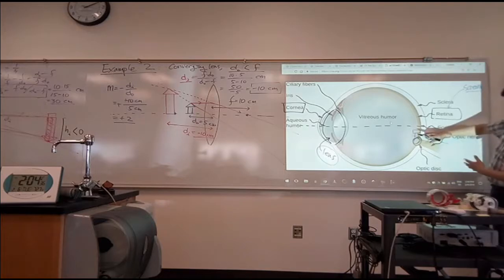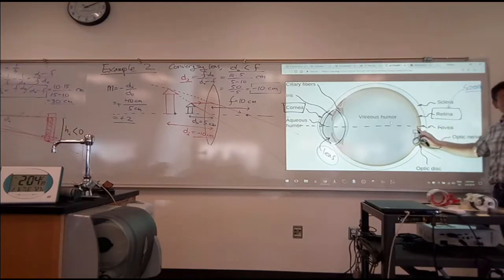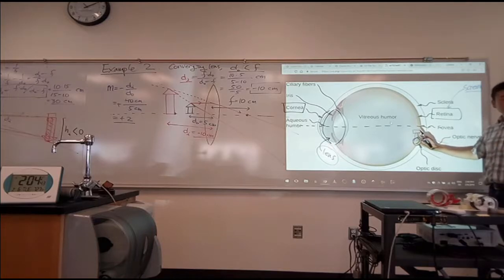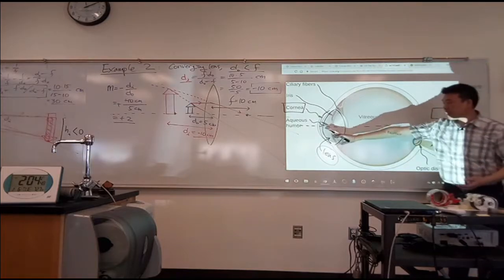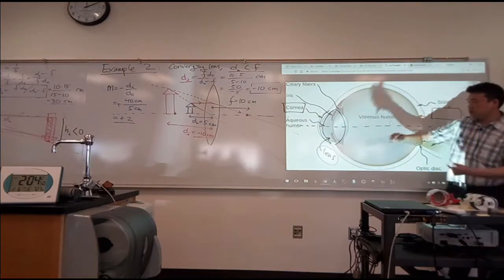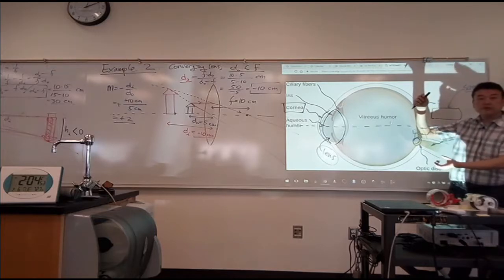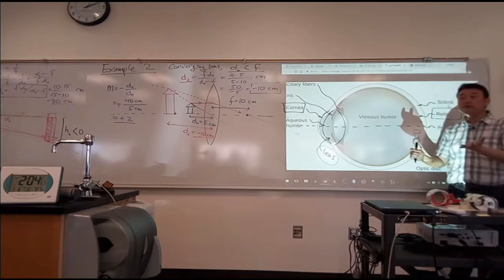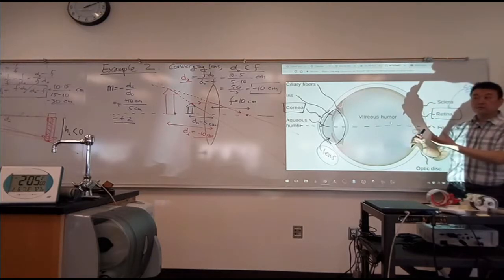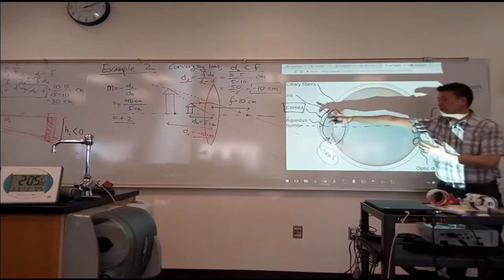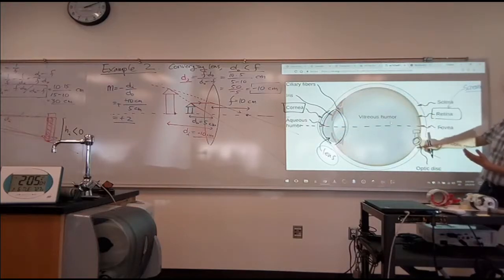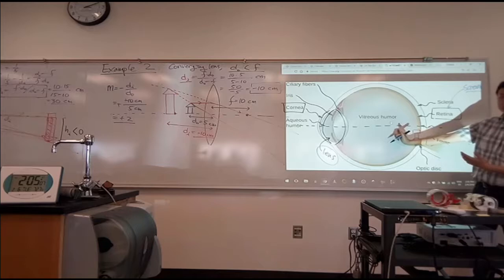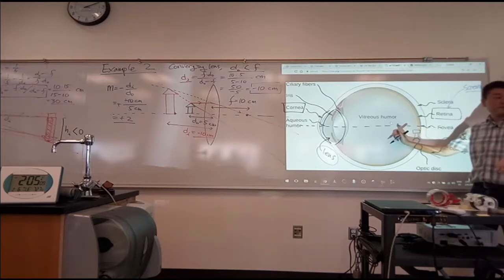This is where the image has to form, or it won't be in focus. When people are nearsighted or farsighted, what happens is that this lens, with these muscles, allows you to change its focal length. But as you get older, or due to congenital defects, sometimes there's a limit to it. When the light rays are coming in parallel, you cannot form a focus at the retina — instead, the focus forms too close. That would be a nearsighted person.